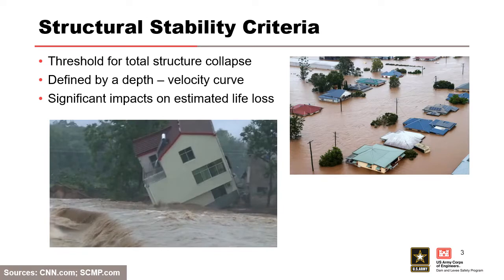Starting with structural stability — when we say stability, we're basically talking about the threshold. We generate depth and velocity functions, and we sample those to determine the stability threshold for a particular structure or individual. The point where depth or velocity exceeds that function means stability has been lost. For structures, that means the structure has collapsed or been washed away, putting occupants in the high hazard zone, which relates back to the fatality rate curve.